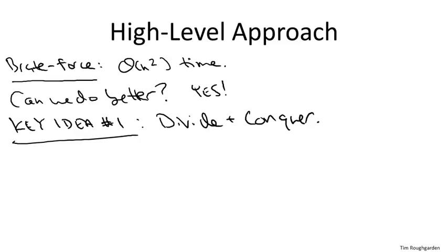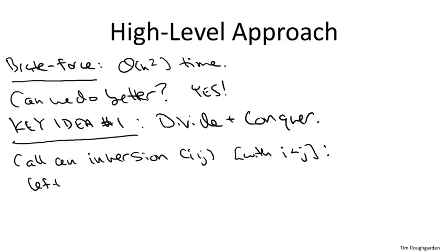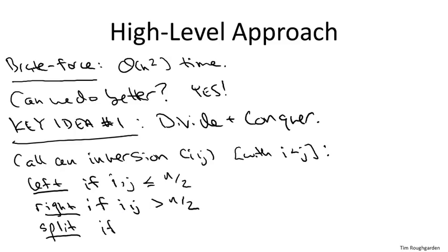To understand how much progress we can make purely using recursion, let's classify the inversions of an array into one of three types. So suppose we have an inversion of an array, i comma j. And remember, in an inversion you always have i less than j. We're going to call it a left inversion if both of the array indices are at most n over two, where n is the array length. We're going to call it a right inversion if they're both strictly greater than n over two.